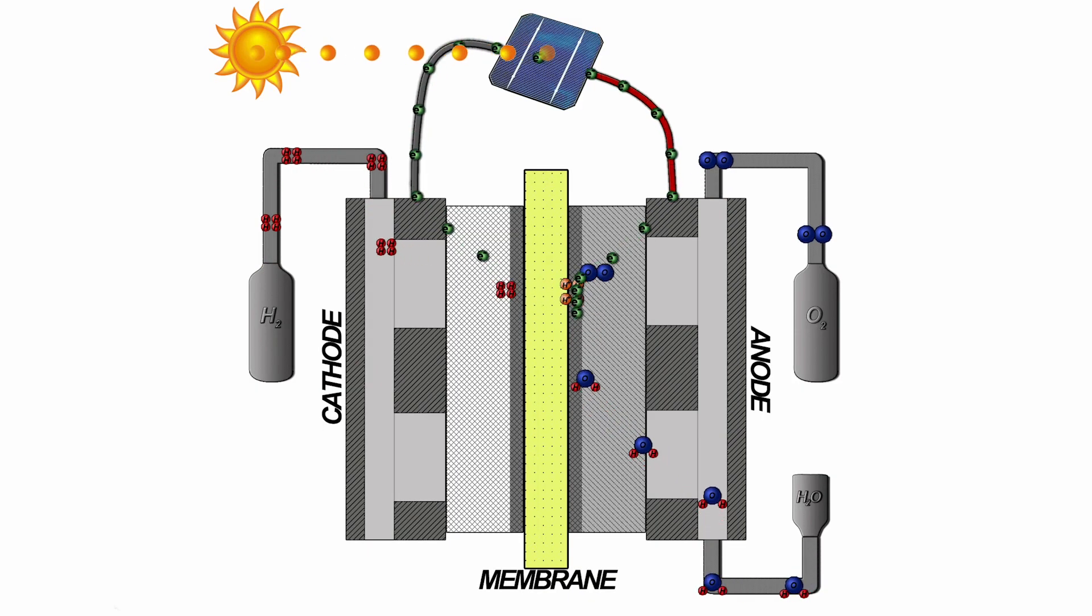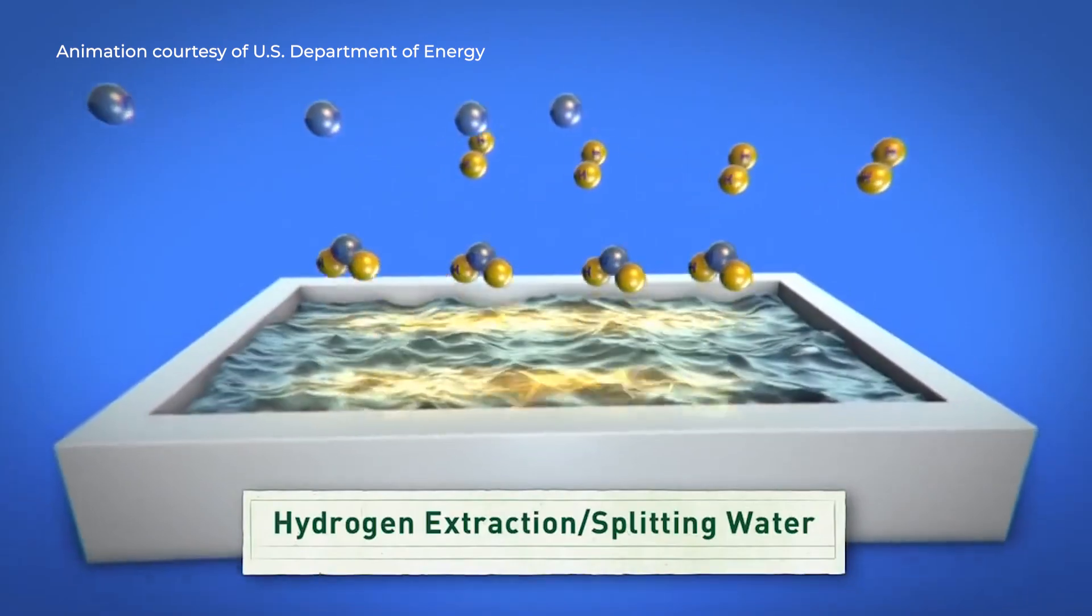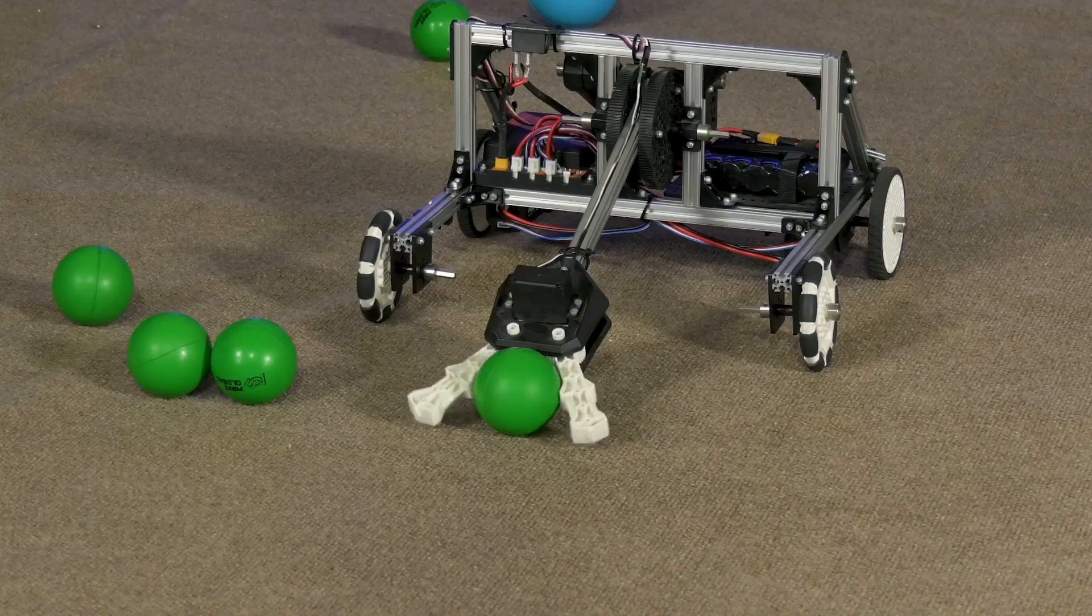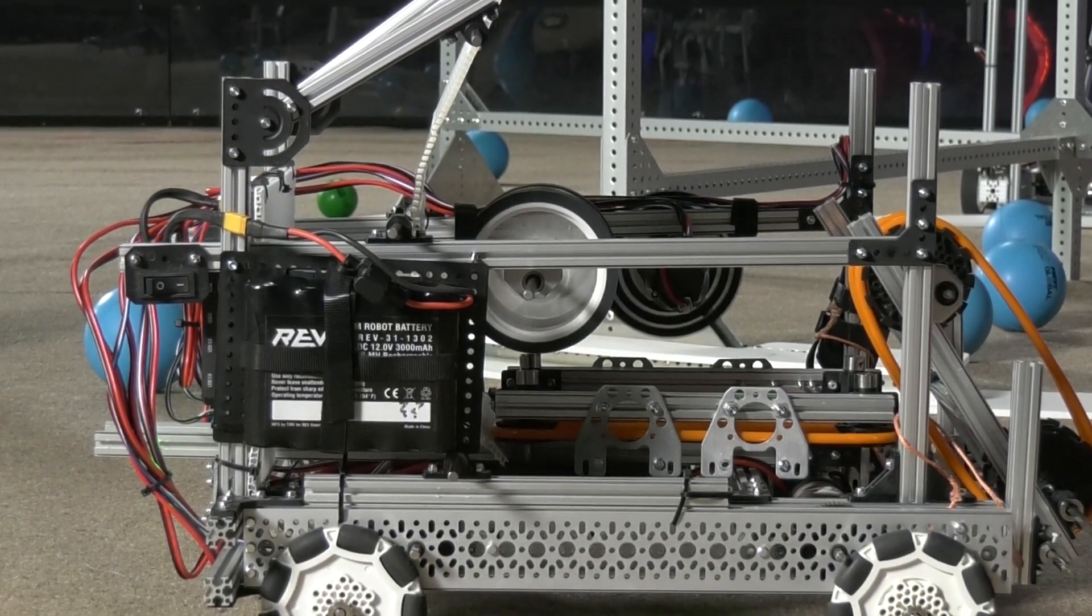The process of electrolysis uses energy to separate water molecules into hydrogen and oxygen atoms. This turns the hydrogen atoms into an energy carrier, which retains that energy until it's converted into a different form.